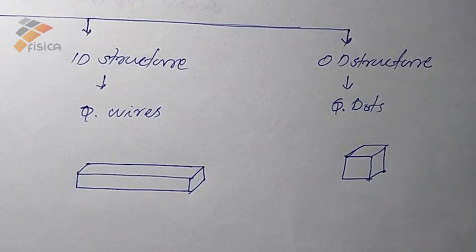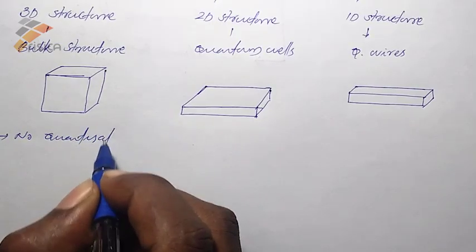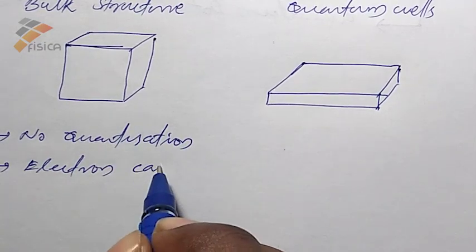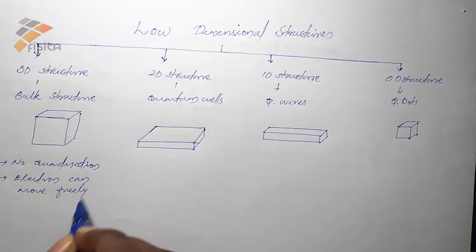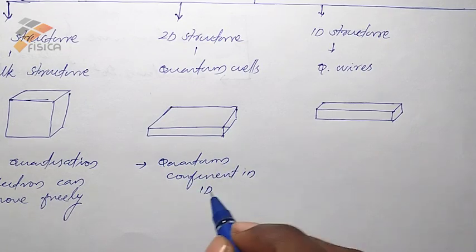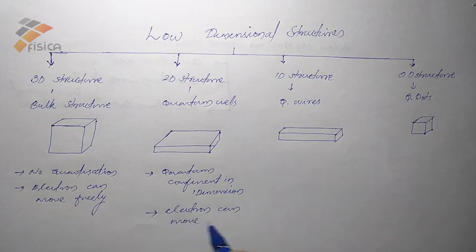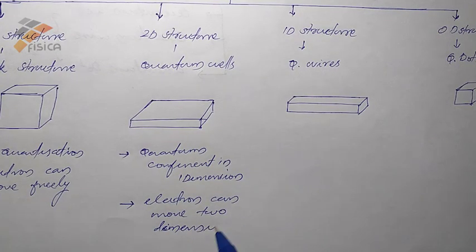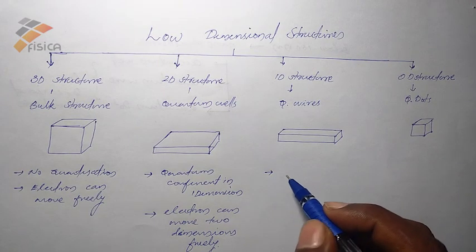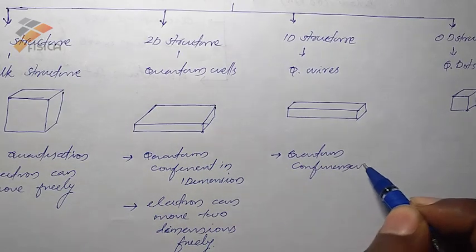In bulk structure, the 3D structure, there is no quantization, so electrons can move freely inside the bulk structure. In quantum wells, there is quantum confinement in one dimension, so the electron can move in two dimensions. In the one-dimensional structure, quantum wires, quantum confinement is in two dimensions.